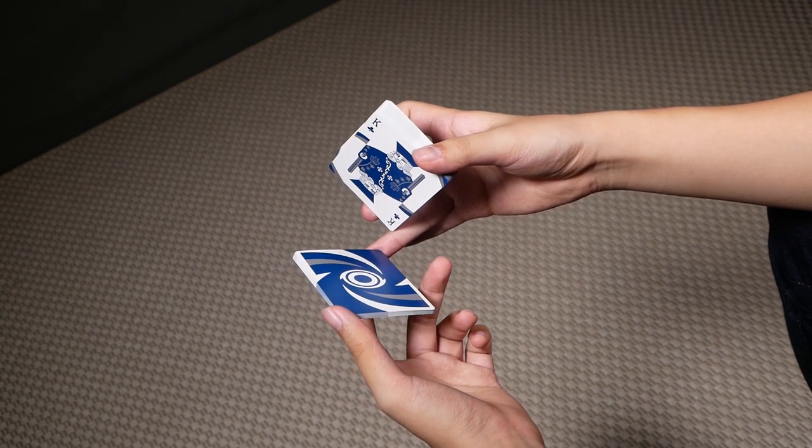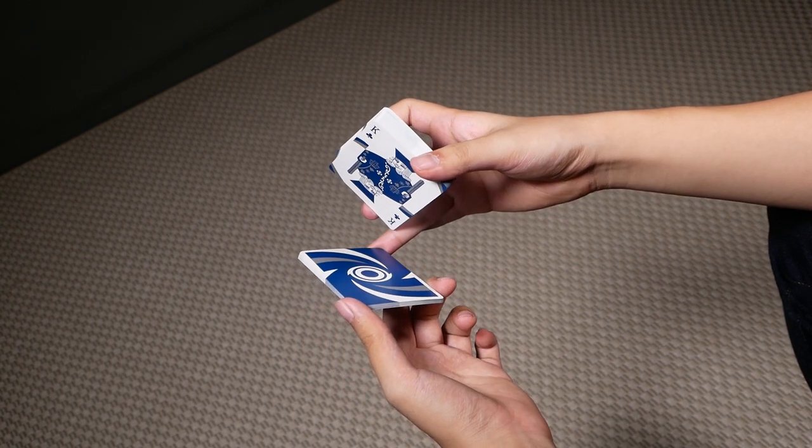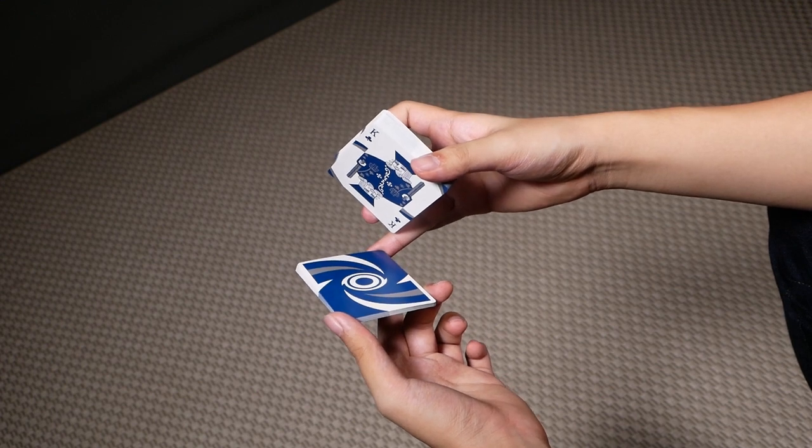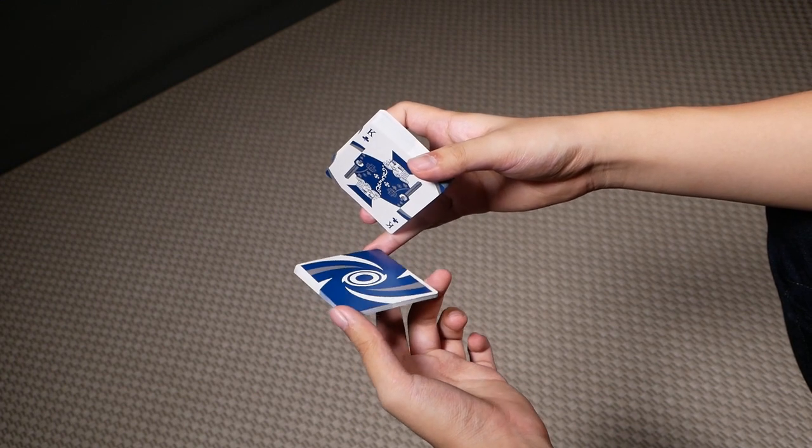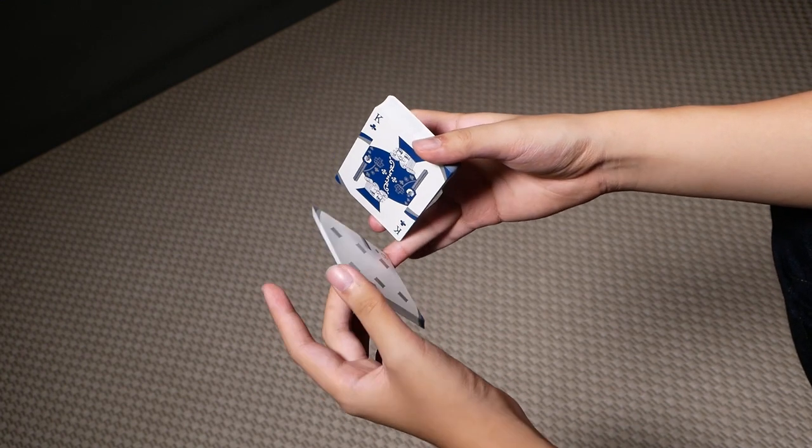Once you've done that, you want your left middle to contact the bottom right corner of this packet here. And you're going to use this finger to spin this packet 360 degrees.